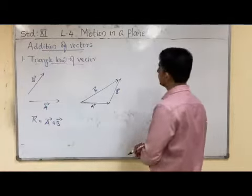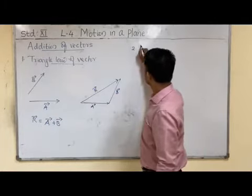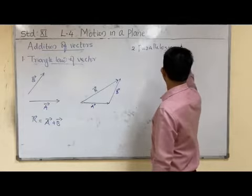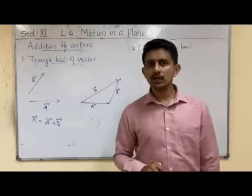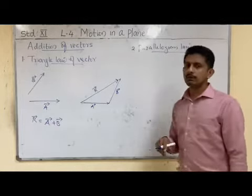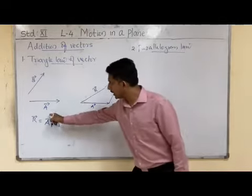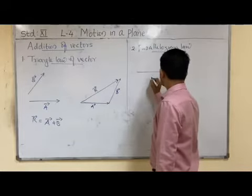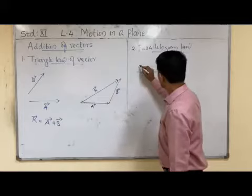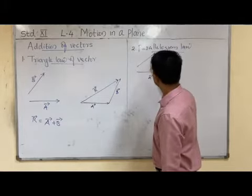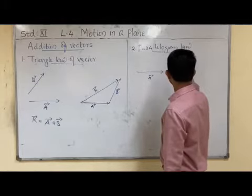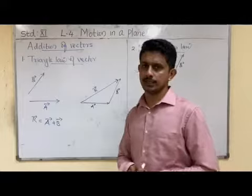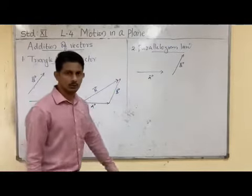There is one more method to add two vectors. That method is known as the parallelogram law of vector addition. When we are considering the parallelogram law, we are going to discuss how we can add the two vectors A and B by this method. Vector A is taken along this direction, and vector B is also taken along the same direction with the same magnitude as in the previous case. We have to add these two vectors by this second method, which is the parallelogram law of vector addition.